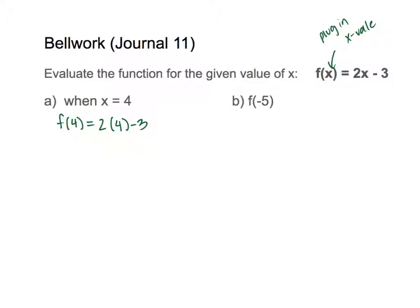Working out the right-hand side: 2 times 4 is 8, minus 3 is 5. So when x is 4, the function's output is 5. And that's it.